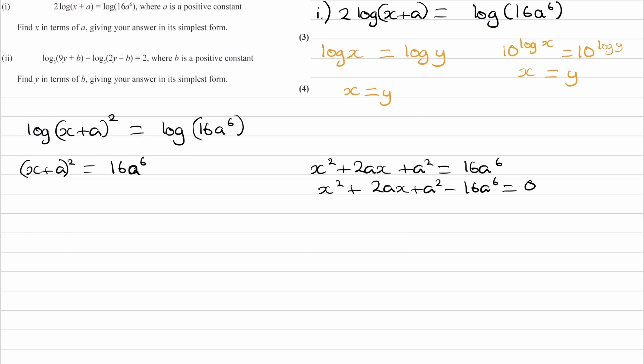So the left-hand side, if we square root it, becomes just x+a. And the right-hand side, these two things are multiplied by each other, so we have to square root each bit. So we end up with 4a to the power of 3.